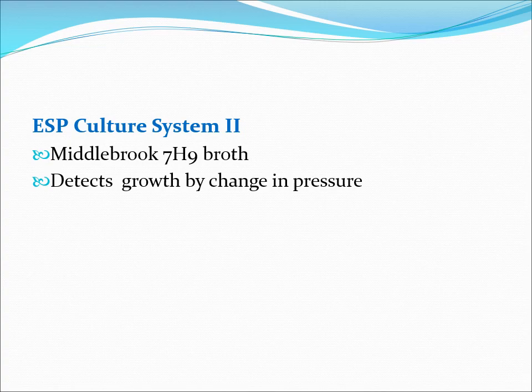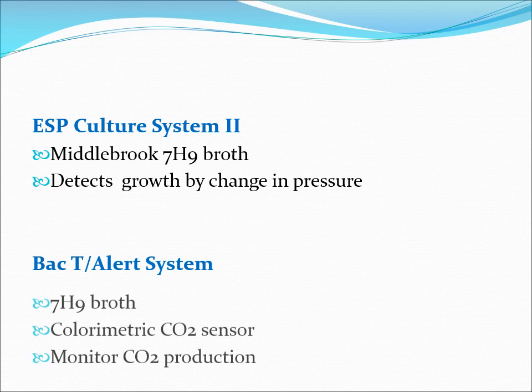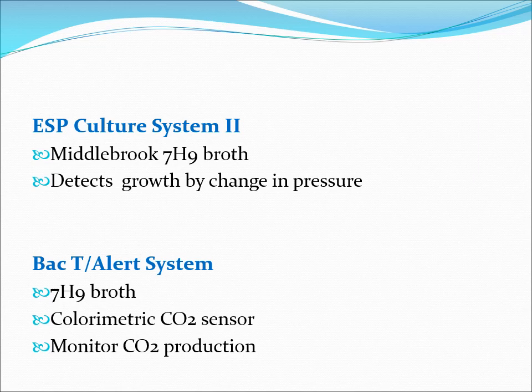The ESP Culture System — remember 'P' for pressure — uses 7H9 broth and detects growth by monitoring changes in pressure as bacteria release CO2. The BacT/ALERT system is based on a colorimetric method: when mycobacteria grow, CO2 is produced, bicarbonate changes the pH, and this brings about a colorimetric change detected by the system.